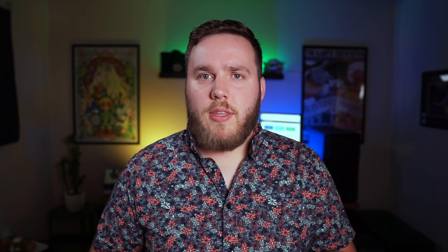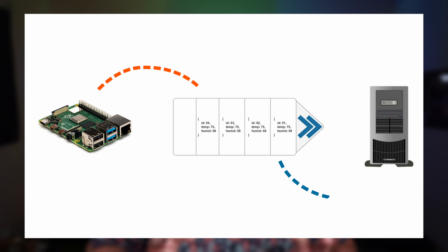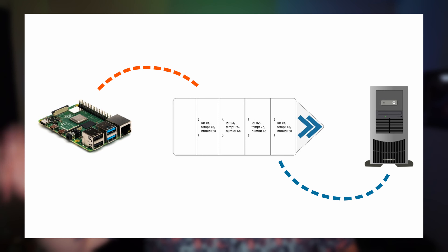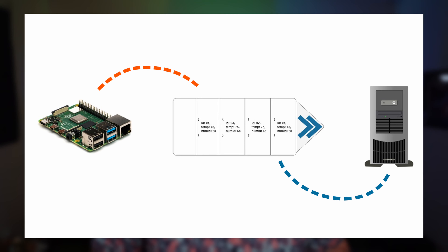A queue is usually set up with three different configurations. The first one is the push-pull method. In the push-pull method, there are one or more applications shoving data into a queue, and one or more applications consuming from the queue. But each consumer gets a unique message — it doesn't send the same message to all the different consumers. Push-pull is frequently used with very high-speed messages that are not expecting any response. Usually those are called fire-and-forget messages.